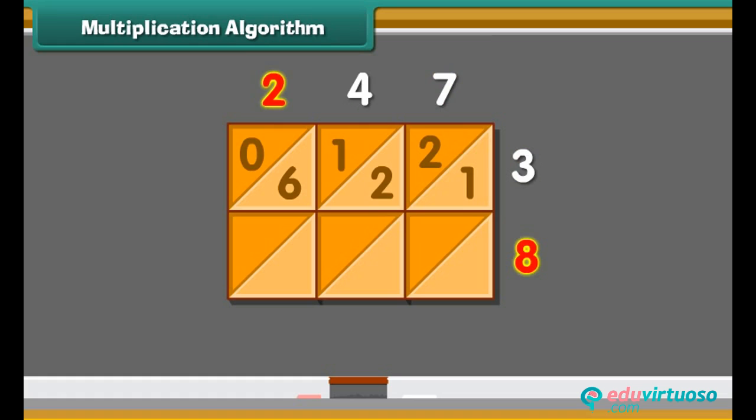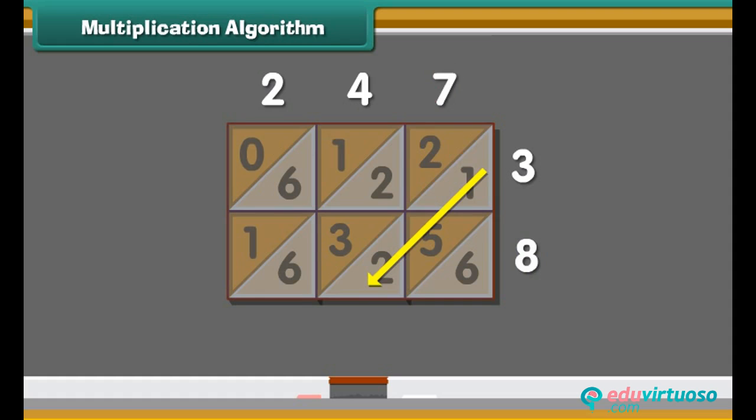Similarly, 8 times 2 are 16, 8 times 4 are 32, and 8 times 7 are 56. Now start at the bottom and add down the diagonal strips. Write 6 as it is. 2 plus 5 plus 1 is 8. 6 plus 3 plus 2 plus 2 is 13.